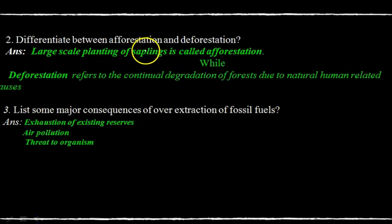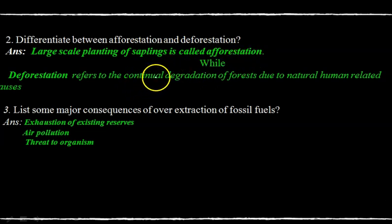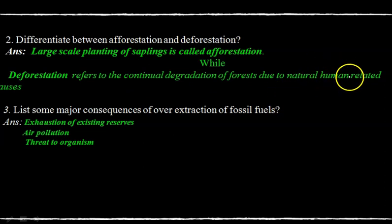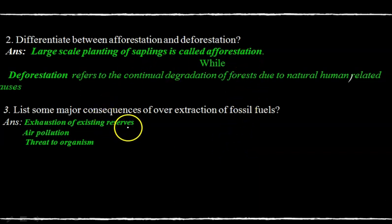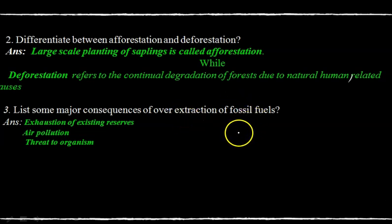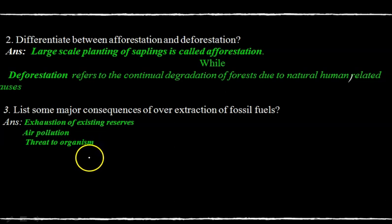Differentiate between afforestation and deforestation: large scale planting of saplings is called afforestation, while deforestation refers to the continual degradation of forests due to natural and human-related causes. Question three: list some major consequences of overextraction of fossil fuels — exhaustion of existing reserves, air pollution, and threat to organisms.